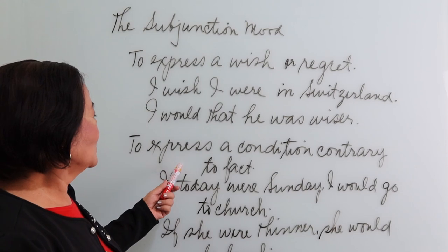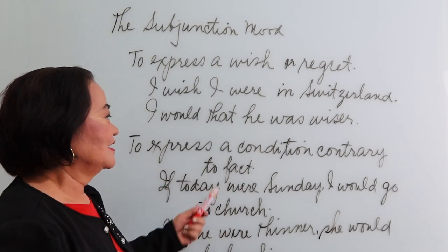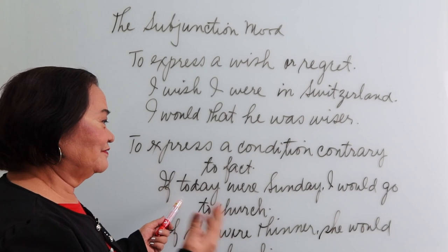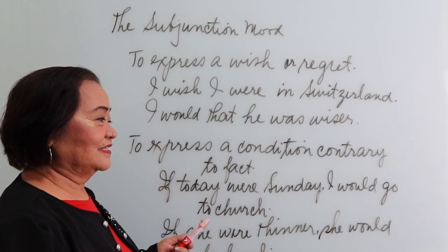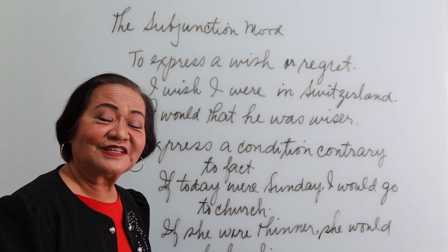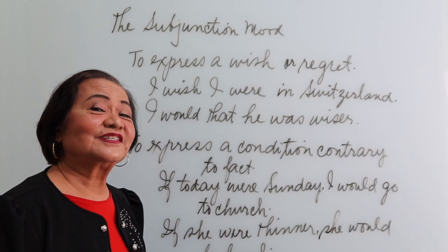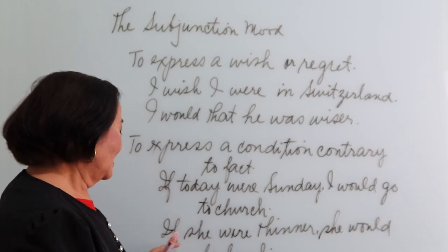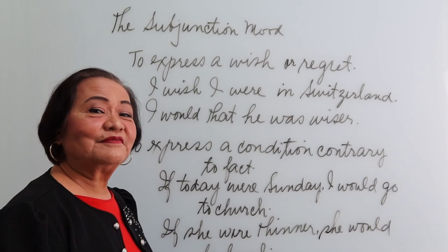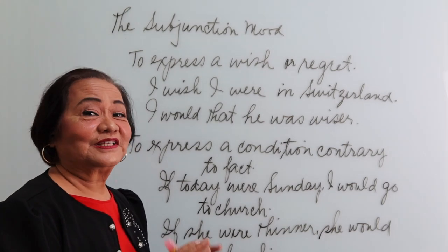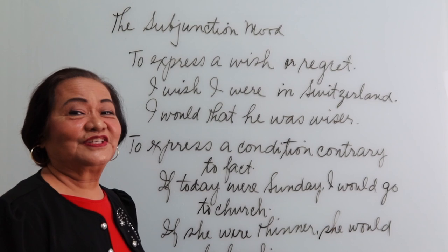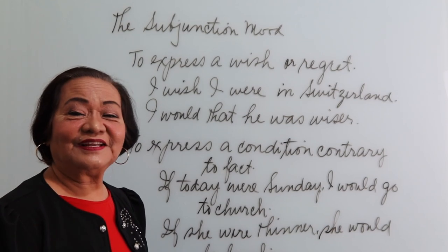The subjunctive can also express a condition contrary to fact. 'If today were Sunday, I would go to church' — that means today is not Sunday. 'If she were thinner, she would be lovelier' — that means she is not thin, and therefore she is not lovely.